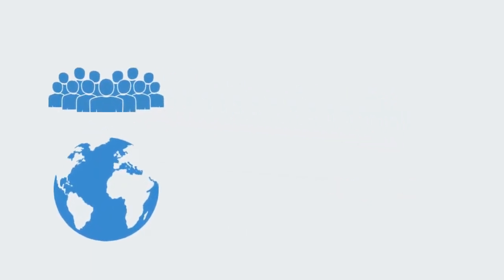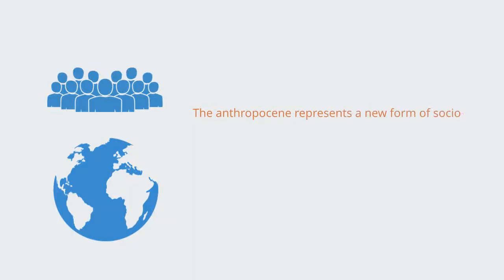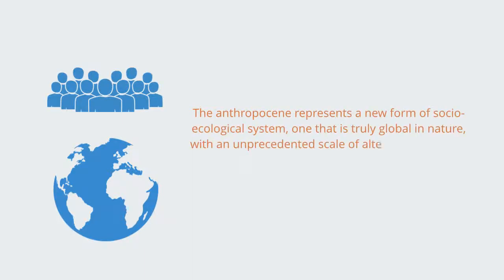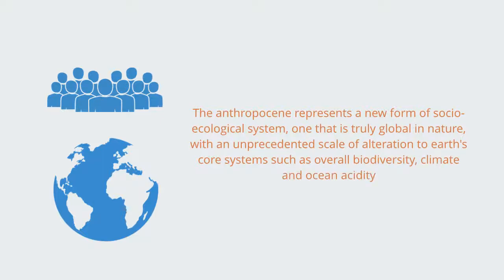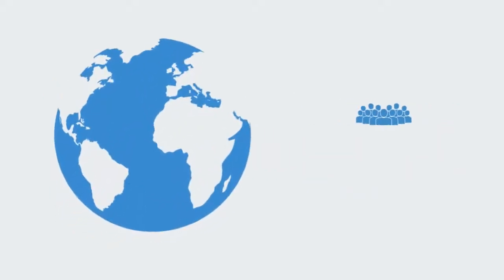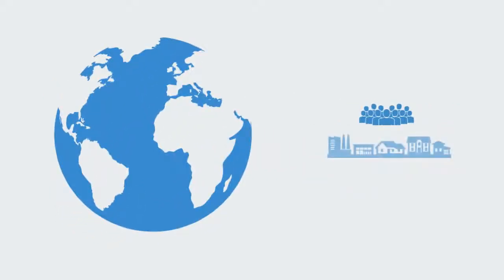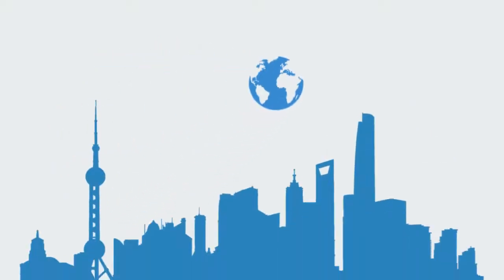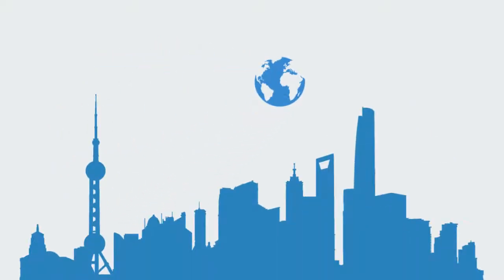The Anthropocene represents a new form of socio-ecological system, one that is truly global in nature, with an unprecedented scale of alteration to Earth's core systems such as overall biodiversity, climate, and ocean acidity. Within the course of just a few decades, we have transitioned from being a small world on a big planet, to being a big world on a small planet — an extraordinary transformation.